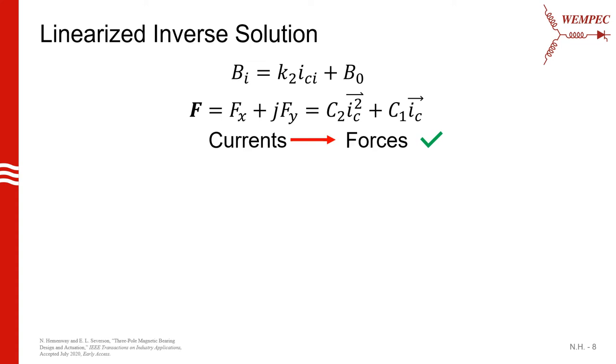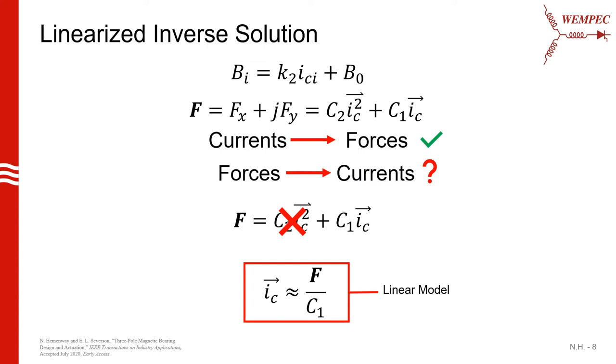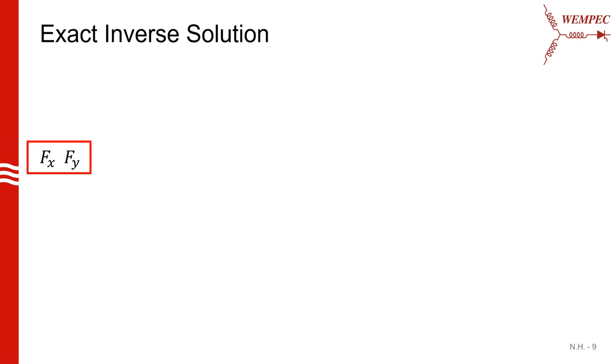What we really care about though, is given a desired force vector, what currents do I have to flow to get that force? So one way we could do this would be to linearize this expression about a zero current operating point. In this case, the first term just goes away, and we end up with a simple expression where we can solve for the current space vector directly. Although simple, this method is not good enough as it can result in large force vector errors that can cause controller instabilities.